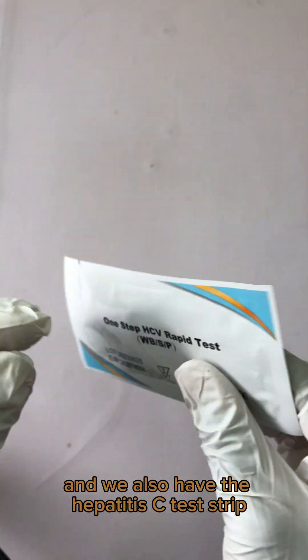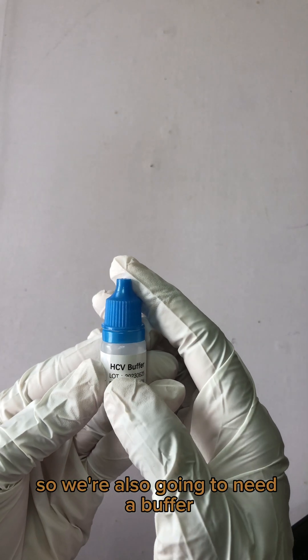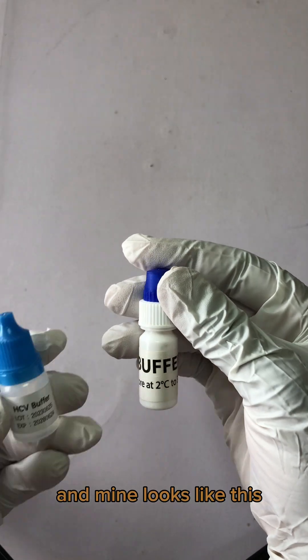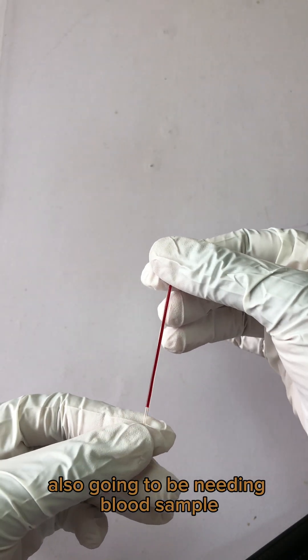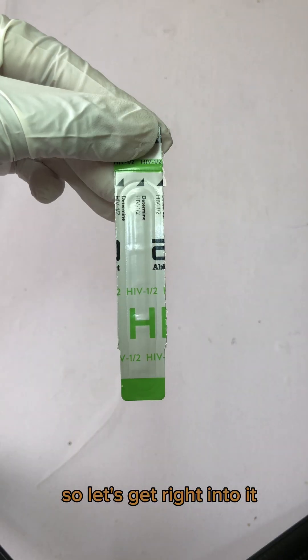And we also have the Hepatitis C test strip. We're also going to need a buffer, and mine looks like this. We're going to be needing a blood sample which I've already collected in this capillary tube. So let's get right into it.